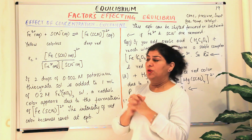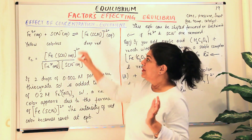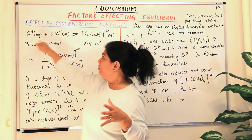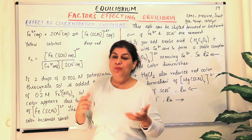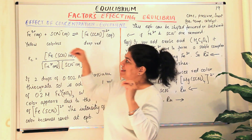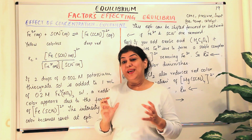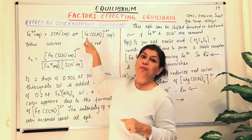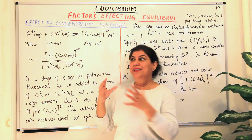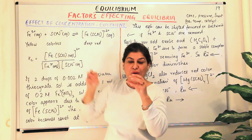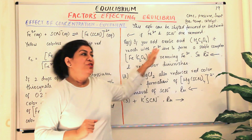On the other hand, we can change the concentration of the reactants by removing them. Since both reactants are in solution and not easy to physically remove, we add something that reacts with one of these ions to form a more stable compound than this complex ion. If that substance forms a more stable compound, it effectively blocks that particular ion, making it unavailable for the equilibrium reaction.